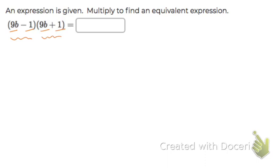When you are multiplying two binomials, you can use the FOIL method. So let's go through those steps.